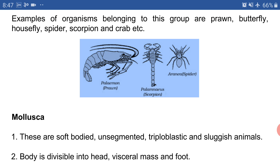Point number two: the body is divisible into head, visceral mass, and foot. The body is divided into three parts — the first part is the head, the second is the visceral mass, and the third is the foot. The foot is the part that helps the animal crawl on the ground, as we have seen in how a snail moves.